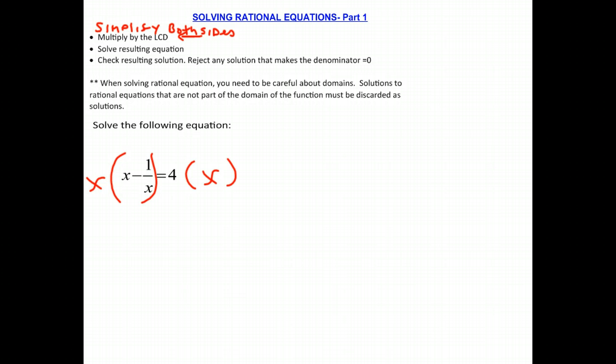And we multiply, we get x times x gives us x squared. x times 1 over x, well, you might realize that the x's cancel out. So you get x times 1 over x equals 4 times x. These x's will cancel out. So you're left with x squared minus 1 equals 4x. So notice that's already very simplified.